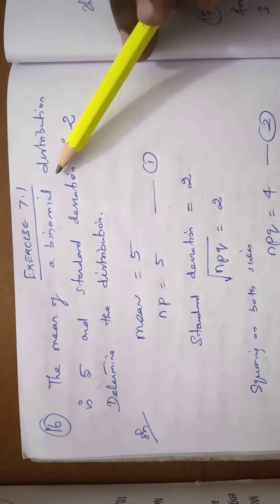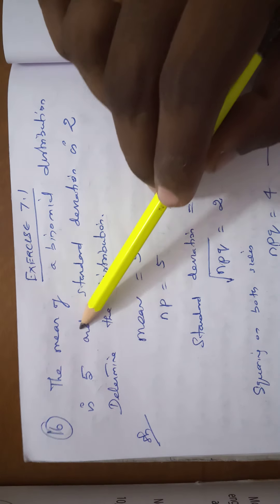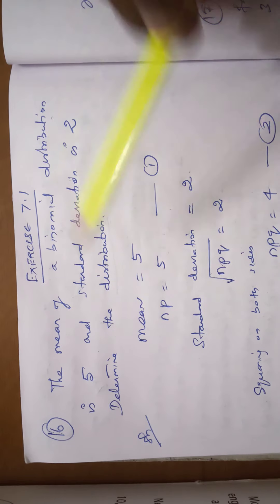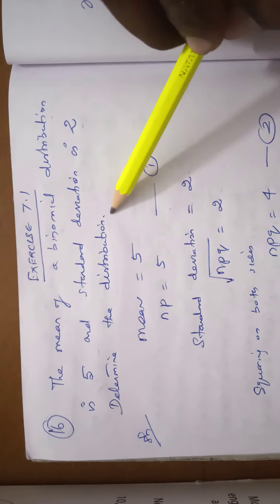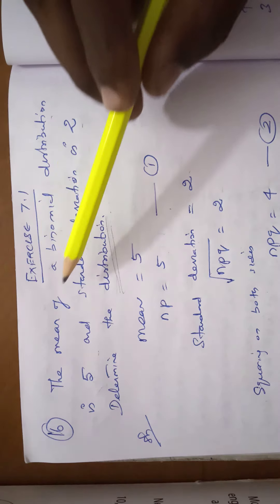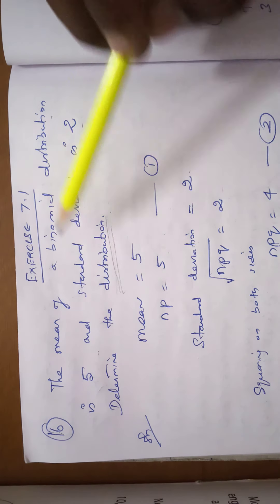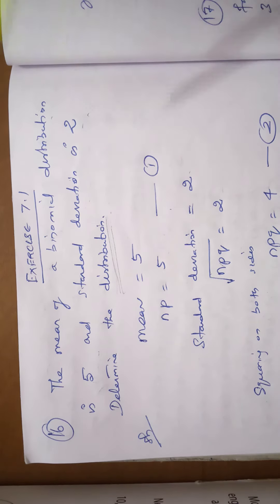Exercise 7.1, question number 16. The mean of a binomial distribution is 5 and the standard deviation is 2. Find the distribution — meaning find the binomial distribution. So the mean of the distribution is given: mean of the binomial distribution is 5, and standard deviation is 2.